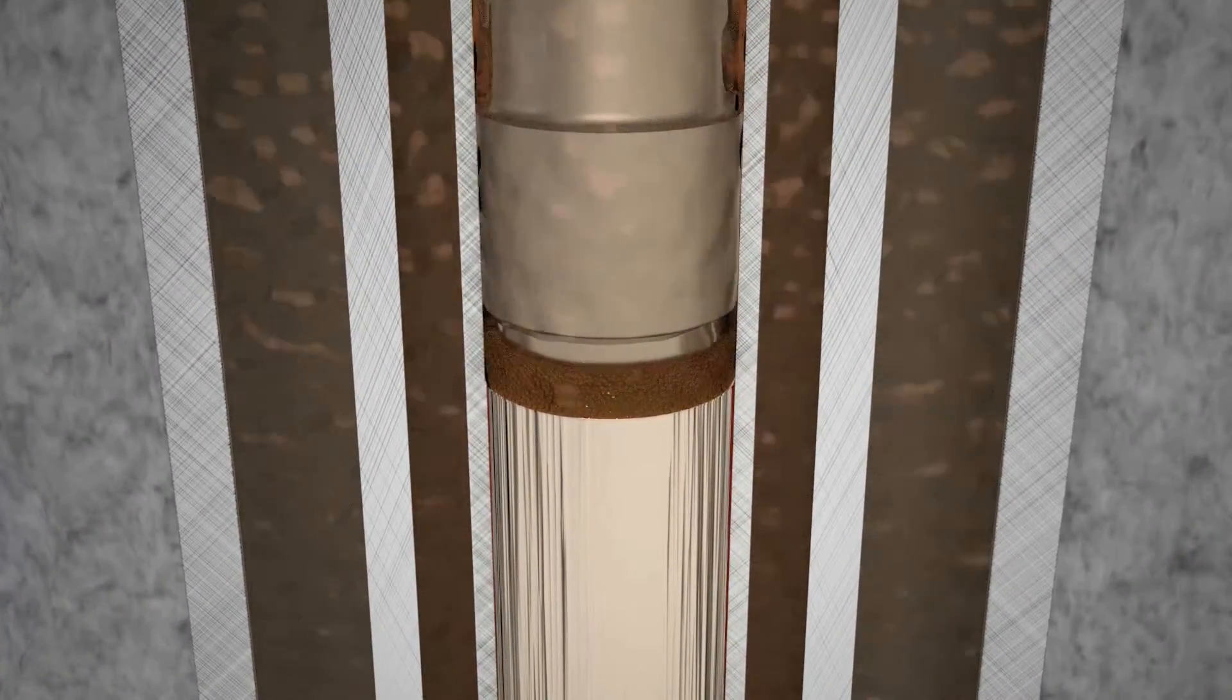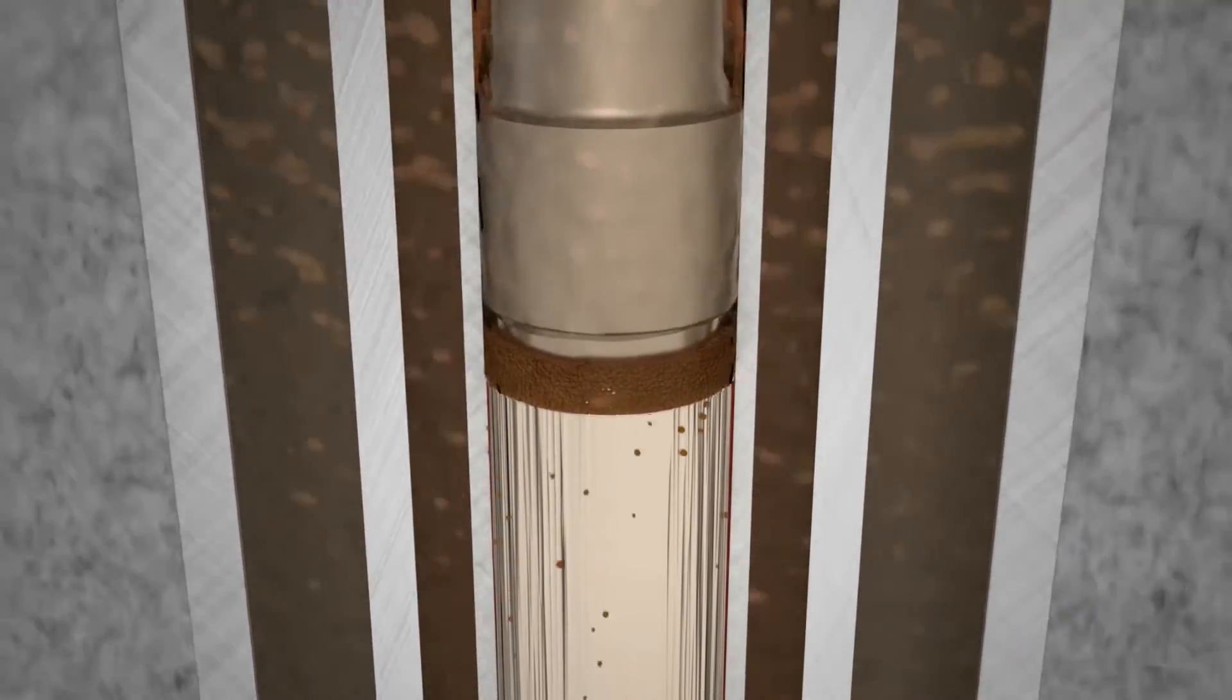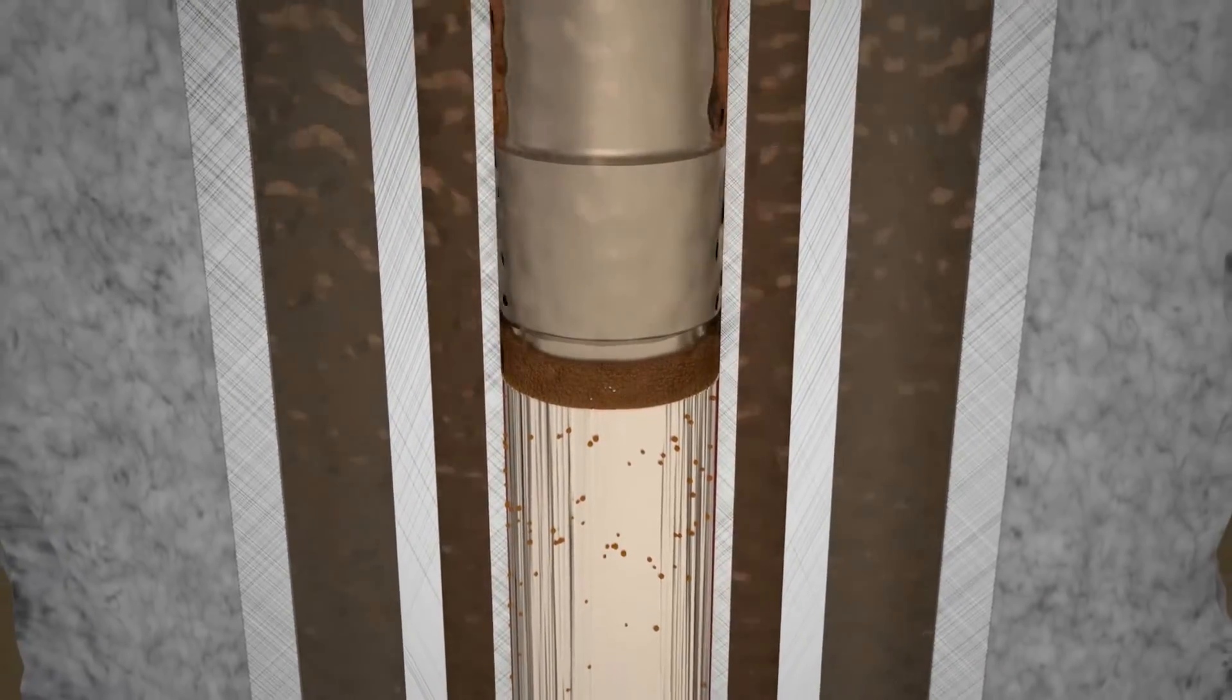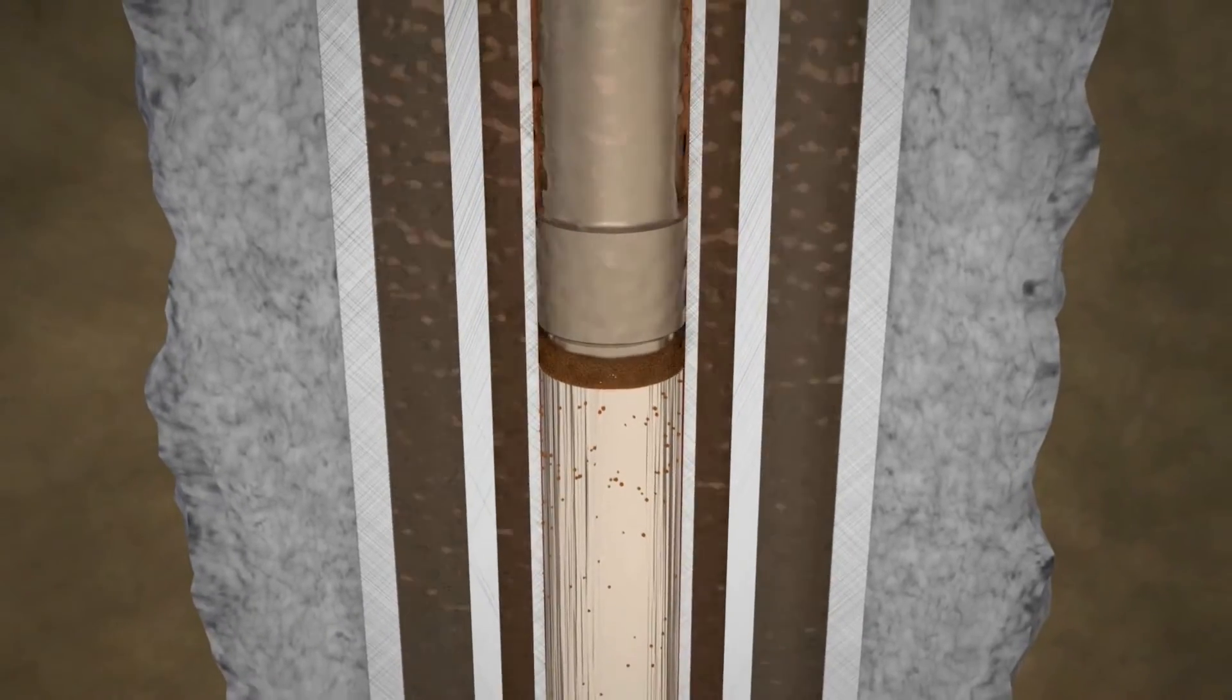When the pumping unit shuts off, sand and fines settle out of the fluid and come to rest on top of the plunger. On restart, the damage is compounded. Depending on the amount of sand, the potential for pump failure increases significantly.